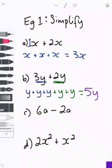Next one, 6a minus 2a. 6 minus 2 is 4, so this equals 4a. And lastly, 2x squared plus x squared. Remember I said if there's no number value in front of the pronumeral, it is always a 1. So 2x squared plus 1x squared equals 3x squared.